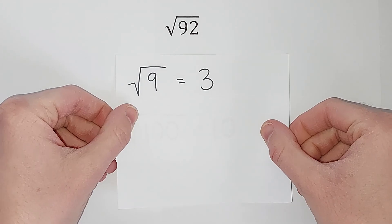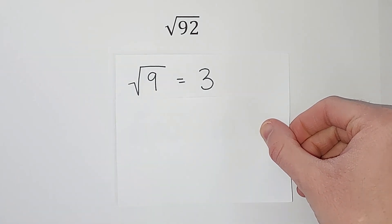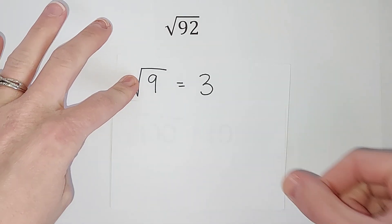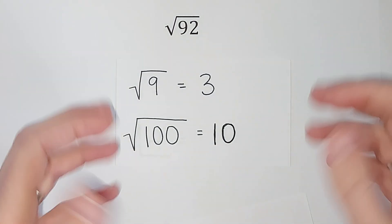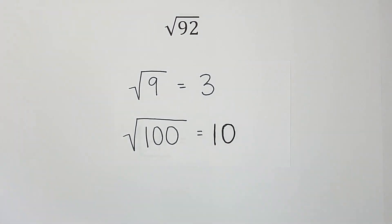Hey guys, we are looking at some square roots today, and more specifically square roots that don't have pretty answers. Quick square root review: square root of 9 is 3 because 3 times 3 gives me 9. Square root of 100 equals 10 because 10 times 10 gives me 100.